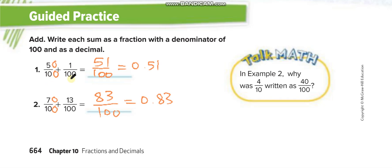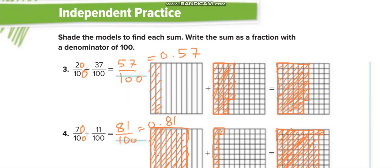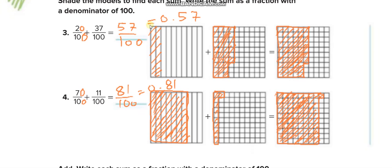Okay, similarly here in independent practice, you guys will solve all these questions by yourself first and then match your answers from this video. This first one, they are shading this one: 2 out of 10. Then we multiply it by 10, so it becomes 20 over 100. 20 plus 37 is 57 over 100, and the decimal is 0.57. Here they shaded 37 out of 100, and here they shaded the total 57 over 100.